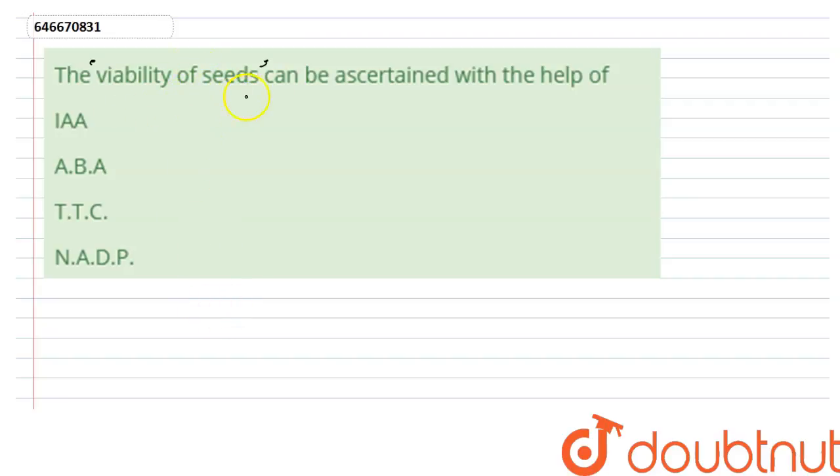For example, you get a seed that is from an extremely rare plant found long ago on earth, and now you want to test if this seed is still viable or not. So you are going to do the test with the help of TTC. What is this TTC?